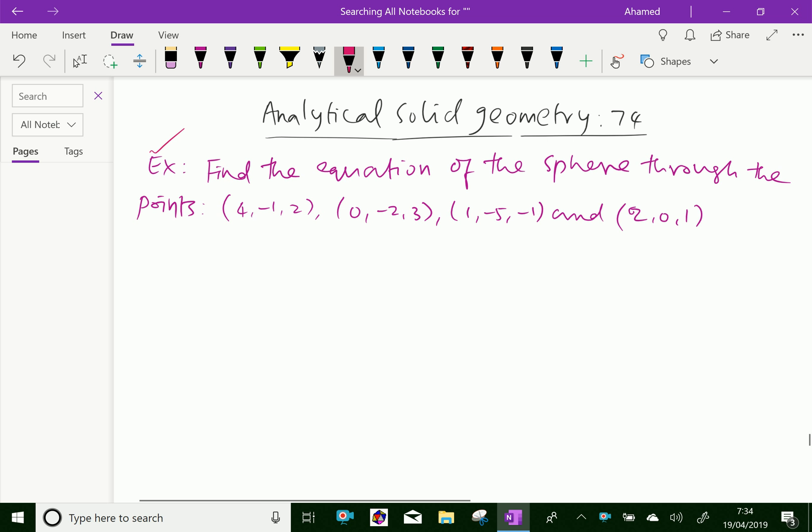Look at this example. Find the equation of the sphere through the points (4, -1, 2), (0, -2, 3), (1, -5, -1) and (2, 0, 1).